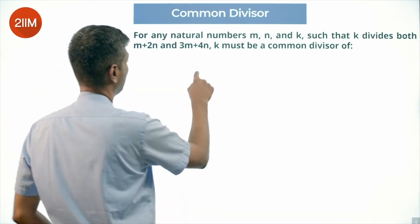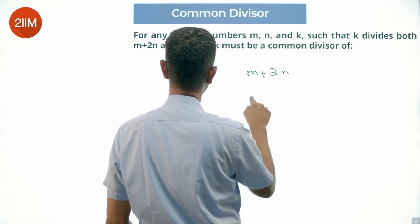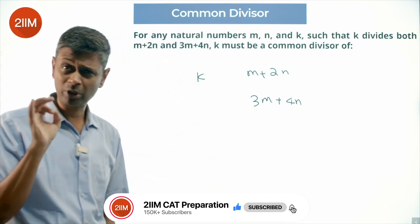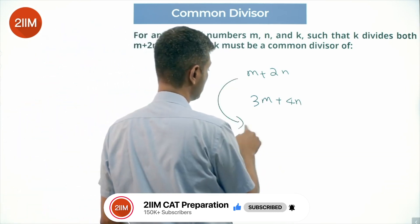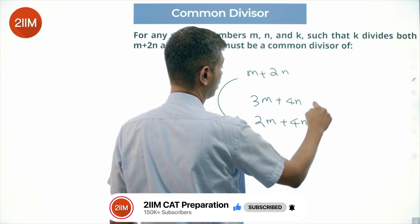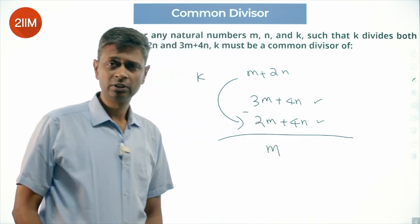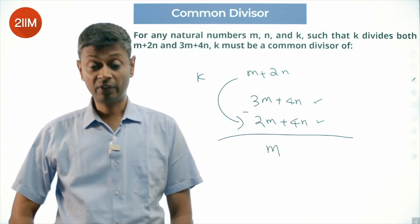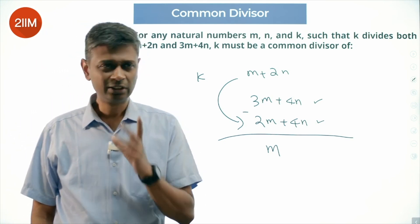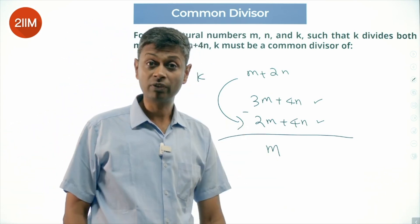So what do we do? We say, nice. K divides M plus 2N, K divides 3M plus 4N. K is a factor of M plus 2N, that means K will be a factor of 2M plus 4N. K is a factor of this and this, K will be a factor of M. I subtract this from this. So what are we doing? We are effectively saying, let me eliminate one variable, see what is remaining. So K is definitely a factor of M.